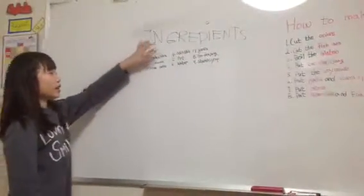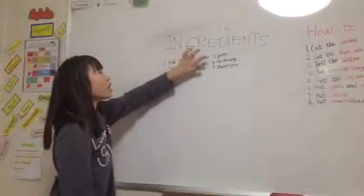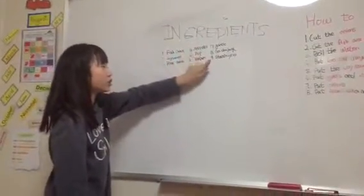We need fish cake, soy sauce, rice cake, onions, a pot, water, garlic, gochujang, and starch syrup.